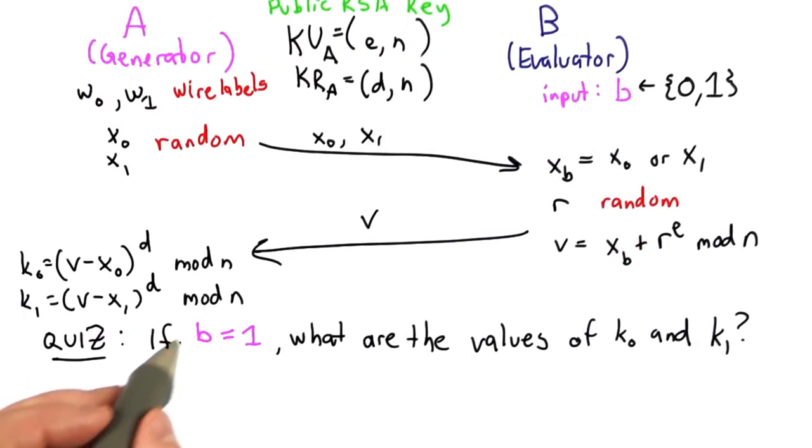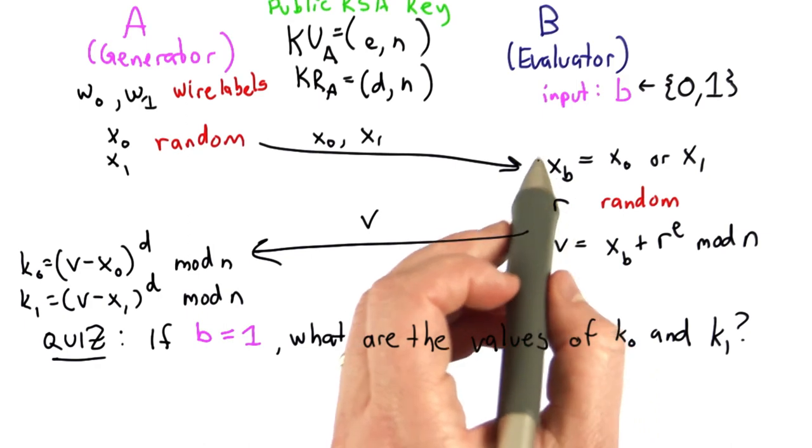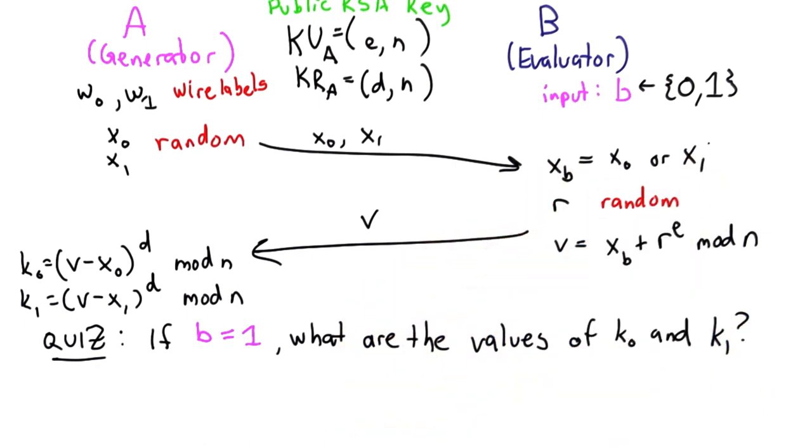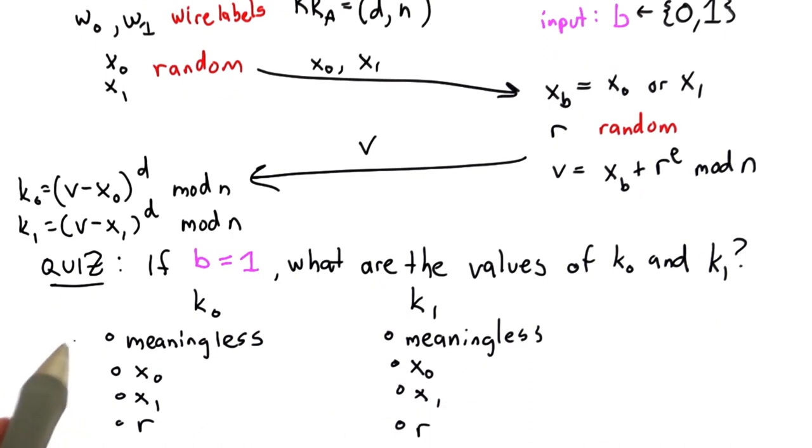So the question is, if b selected 1 as its input, so that means b has the value for xb is equal to x1, what are the values of k0 and k1? Select the best answer for each choice. It could be meaningless, it could match x0, x1, or r.